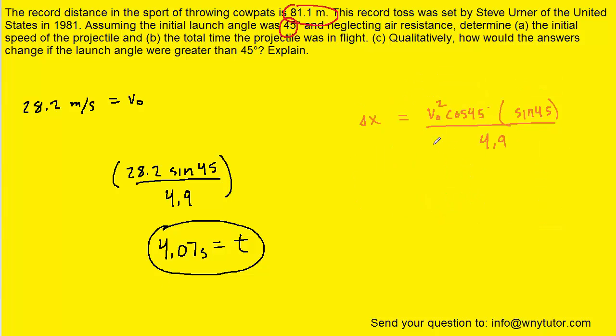One way of answering part c is to return to the work we derived earlier where we had the 45 degree angles plugged in. We're being asked for a launch angle greater than 45, so we could try 60. If we plug 60 degrees in, we could multiply cosine 60 by sine 60 to get about 0.433. This equation becomes delta x = V0^2 × 0.433 / 4.9.